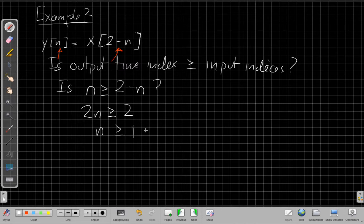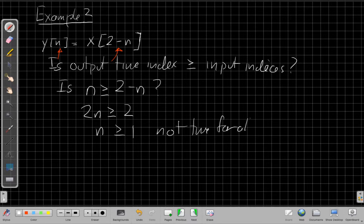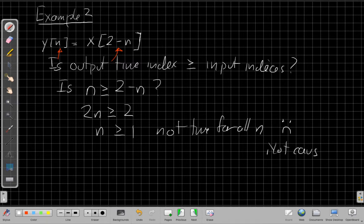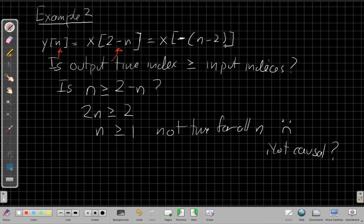Is n always greater than or equal to 1? Well, no. This is not true for all n. So this means this system is not causal. In fact, we've seen this in class already. This is the system that flips the input and then delays it by 2. We could factor the minus sign out and when I break it down that way, I can see that this is the system that flips the input and then delays it by 2. Flips are usually a good sign that things aren't causal. Having something flip is usually a good sign that it's not going to be causal.